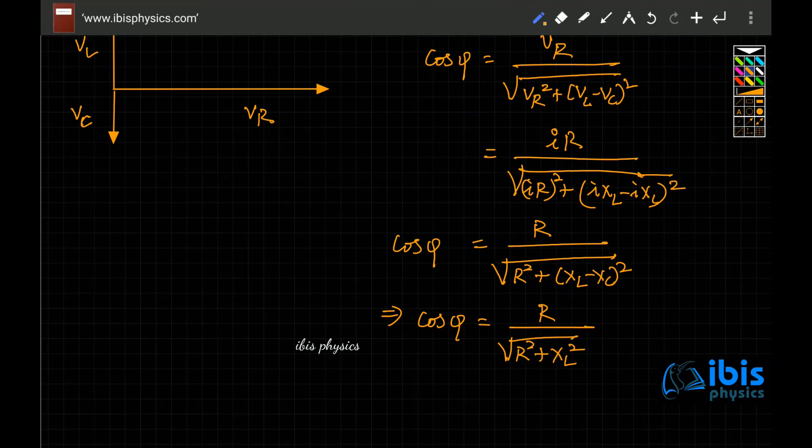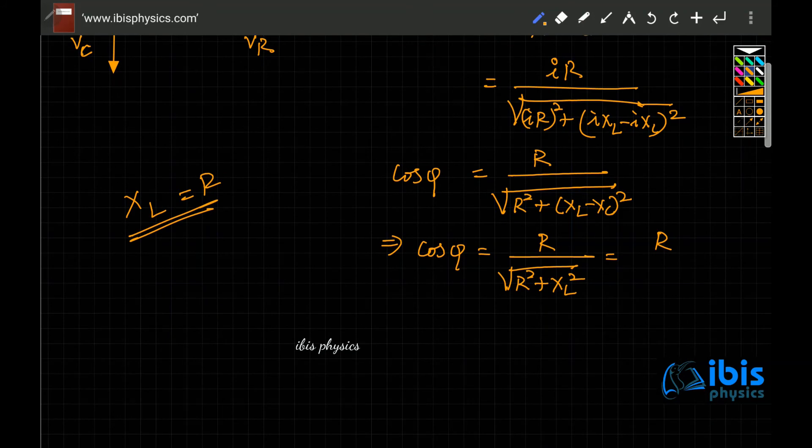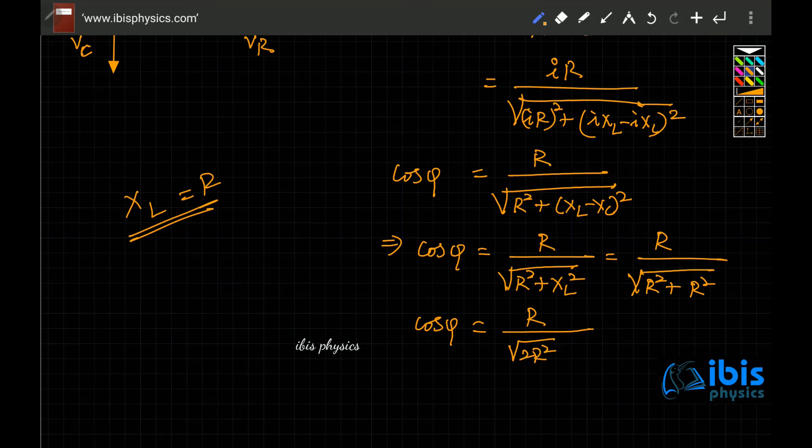If the inductive reactance and resistance are same, you can replace XL with R. When you replace XL with R, what you will be getting R divided by root over R square plus R square. That means cos phi is equal to R divided by root over 2R square, that is nothing but R divided by root 2 times R. They cancel out, so that is equal to 1 by root 2.